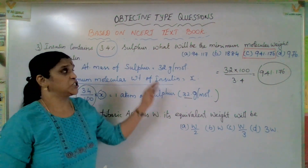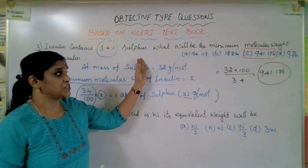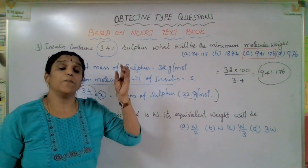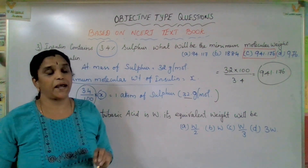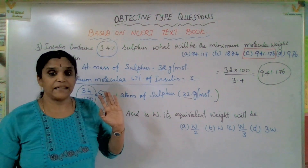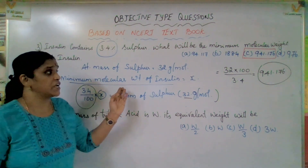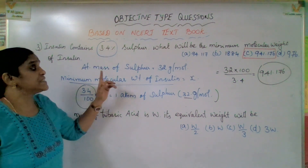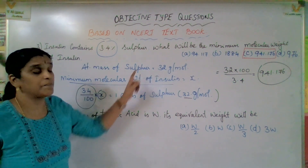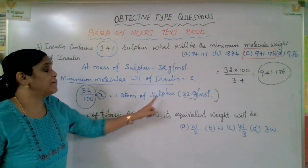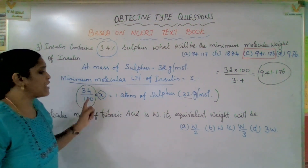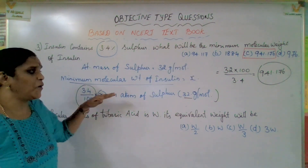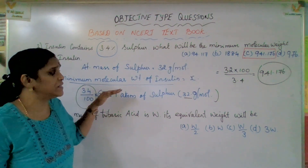Even in the last class we saw such a kind of question. In that, they had given the molecular weight and asked how many atoms are present. But here in this question they have given the percentage. From the atomic mass of sulphur — one atom of sulphur is this much — therefore we can find the molecular weight of insulin.